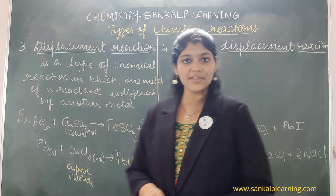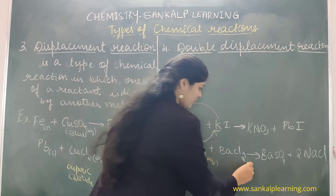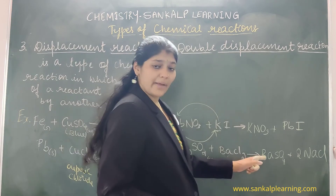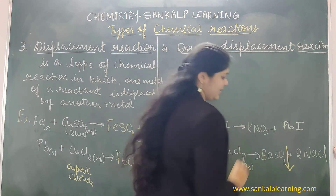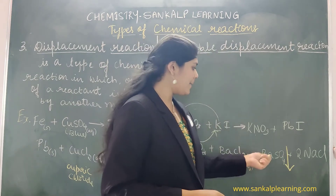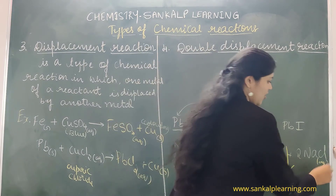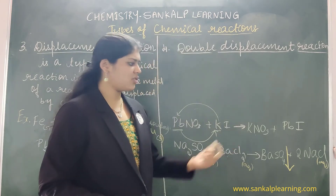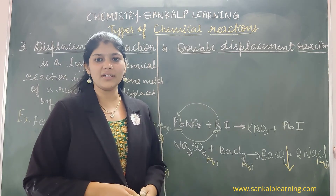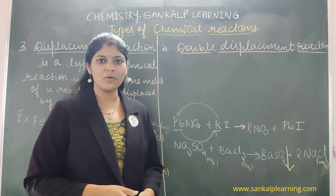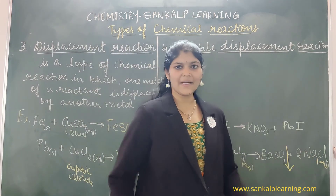Looking at the physical states: sodium sulphate and barium chloride are in aqueous solutions — dissolved in water. Barium sulphate, though present in the reaction medium, is actually insoluble; hence we show a downward arrow indicating it is a precipitate. Sodium chloride (2 NaCl) is aqueous because it is easily soluble in water and cannot be seen separately, just as table salt dissolved in water looks the same as normal water.